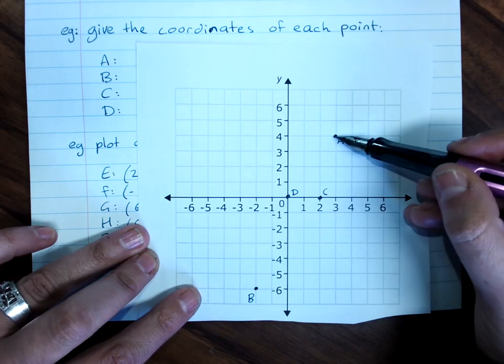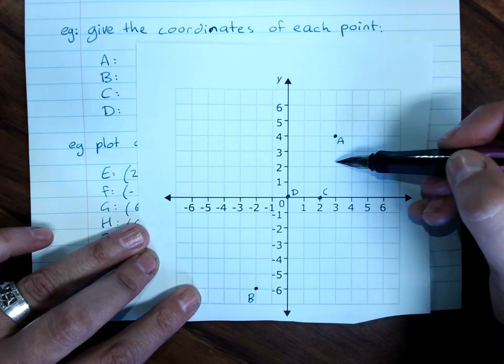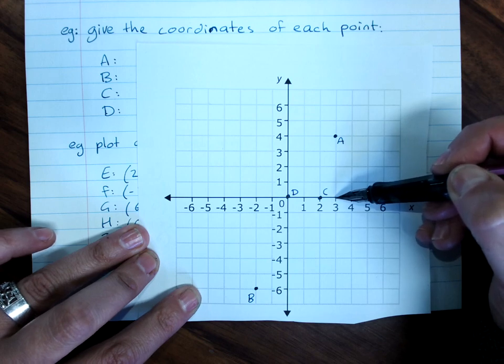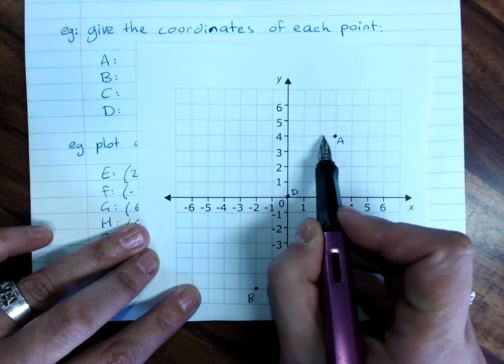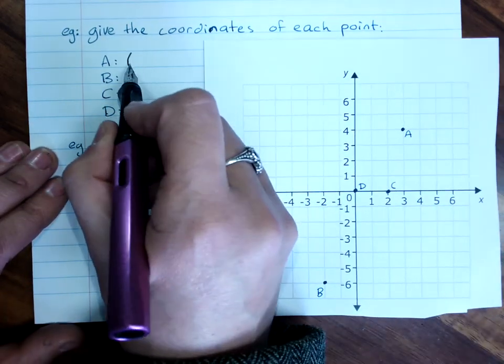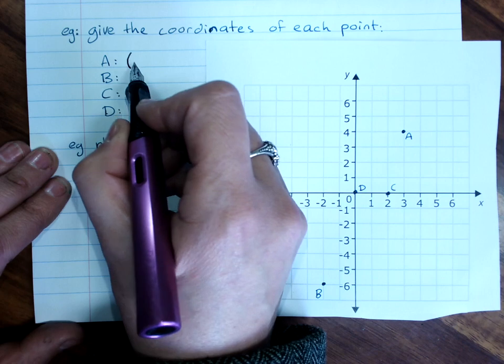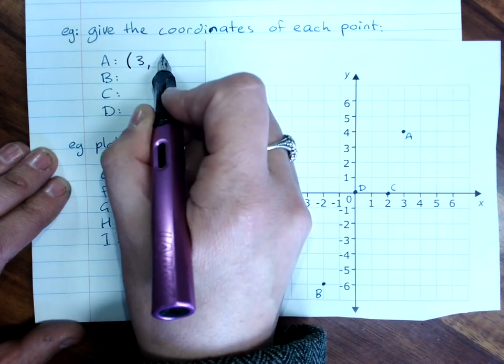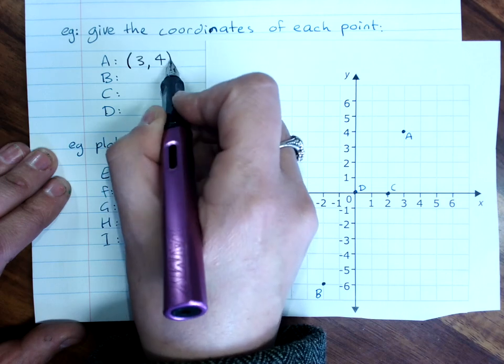So point A, we read down until we get to the x-axis, it's three on the x-axis. Across till we get to y, it's four on the y-axis. So we put brackets, the x value of three is first, comma, the y value of four is second.